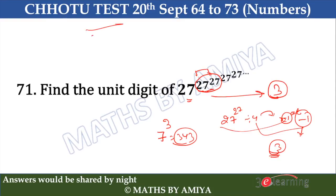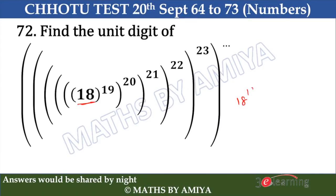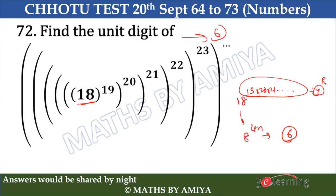I know I am a bit faster, but it's a test and your exam is approaching. You are fighting with the cream of candidates, so you have to be at that level. Question 72: we have 18, and the power is 19 × 20 × 21 and so on. When you divide this power by 4, the remainder is 0. We know 8 raised to power 4 always ends in 6. So the answer is 6.